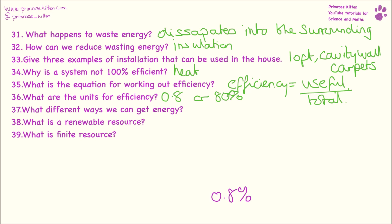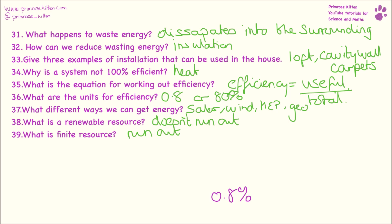Different ways we can get energy: solar, wind, hydroelectric power, geothermal — loads and loads of different ways we can get energy, and you need to know about all of them in detail. What is a renewable resource? That is one that doesn't run out. And a finite resource is one that does run out. There we go guys — some quick questions to help you with that topic.